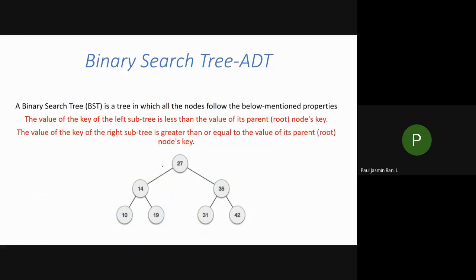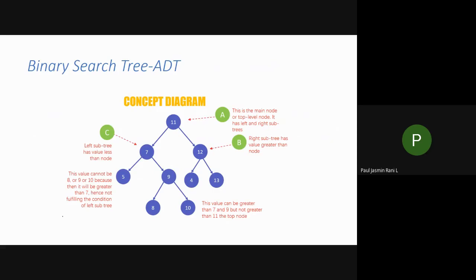In a binary search tree, the left side should contain lesser elements and the right side should contain greater elements. All elements in the left subtree are less than the root, so the root is greater than the left side. Similarly, the root element is less than the right side elements. You have to follow these rules.